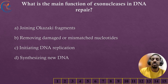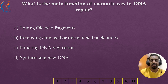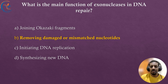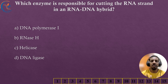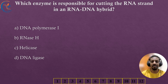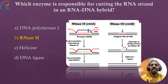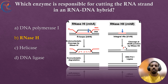What is the main function of exonucleases in DNA repair? The correct answer is removing damaged or mismatched nucleotides. The next question: which enzyme is responsible for cutting the RNA strand in an RNA-DNA hybrid? The correct answer is RNase H. RNase H selectively removes the RNA strand from the RNA-DNA hybrid, allowing for proper DNA replication and repair.